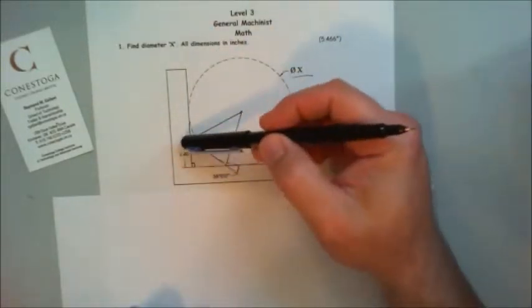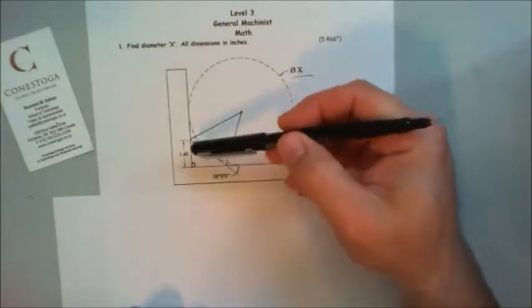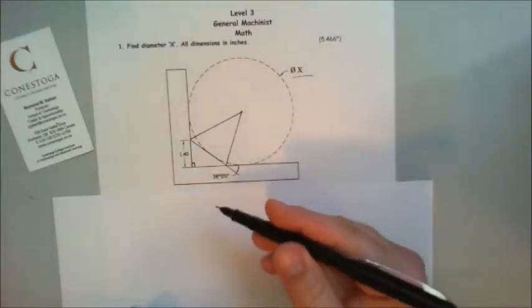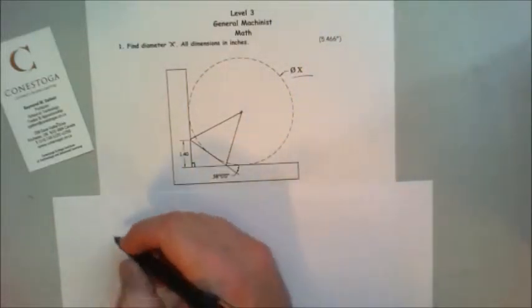The only things that we have is the height here, from this line to here, which I created a triangle and an angle. So let's solve the inside of this triangle. Let's draw the triangle out.